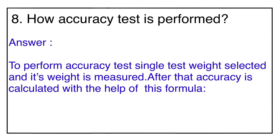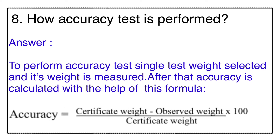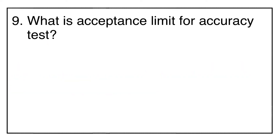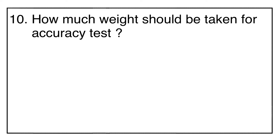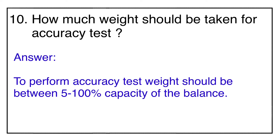Question number eight: how is the accuracy test performed? A single test weight is selected and its weight is measured. Accuracy is then calculated using the formula: (certificate weight − observed weight) / certificate weight × 100. Question number nine: the acceptance limit for the accuracy test is not more than 0.10%. Question number ten: the weight taken for the accuracy test should be between 5 to 100% of the balance capacity.